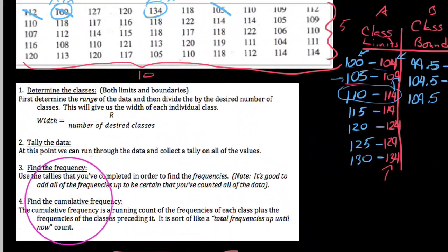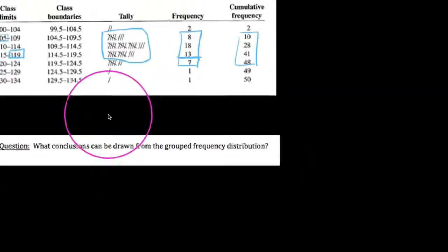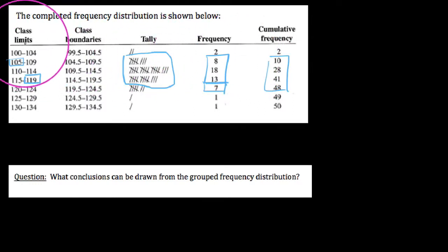The last thing we need to do is find the cumulative frequency. Cumulative frequency, it's a running count of the frequencies of each class, plus the frequencies of the classes that come before or preceded. It's like a total frequencies up until now kind of count. When you look at this frequency distribution, in the first class, in states that had temperatures that were the highest temperature between 100 and 104, there were two of them. Up until now, I've counted two states. Once you get up to the second class here, there were eight states that indeed had high temperatures between 105 and 109 degrees. But up until now, I've counted up 10 total things. This cumulative frequency here is really the frequency of this class, plus all the frequencies before it. How am I getting this 28? Well, 28 is the 18 for this class here, plus the 10 that I've counted up until now.